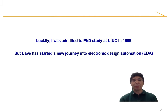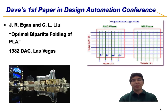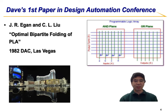Luckily, I was admitted to the PhD program at the University of Illinois with Dave as my PhD advisor in 1987. However, when I got there, Dave had started a new journey into electronic design automation. Dave's first paper at DAC — the Design Automation Conference, which is the flagship conference in EDA — was on optimal bipetype folding of PLAs. It was 1982 in Las Vegas, an exciting city, but more importantly, an exciting time, when IC design complexity started its long multi-year exponential growth.